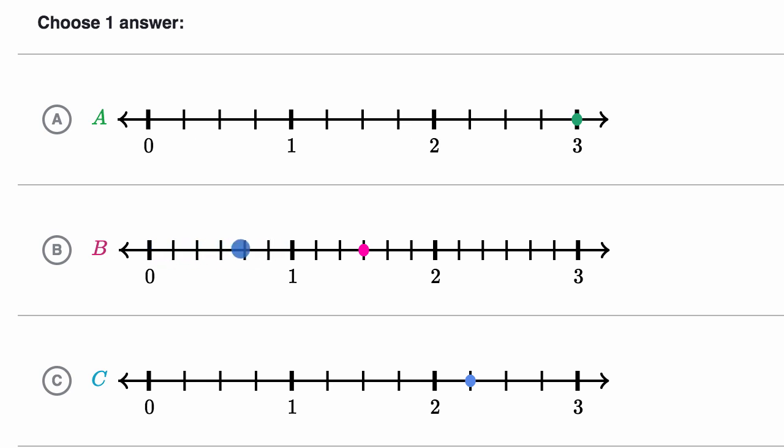So to go from 0 to 1, you've already gone 6 sixths, and then 7 sixths, 8 sixths, 9 sixths. So this is 9 sixths, not 9 fourths. And so let's look at this last choice.